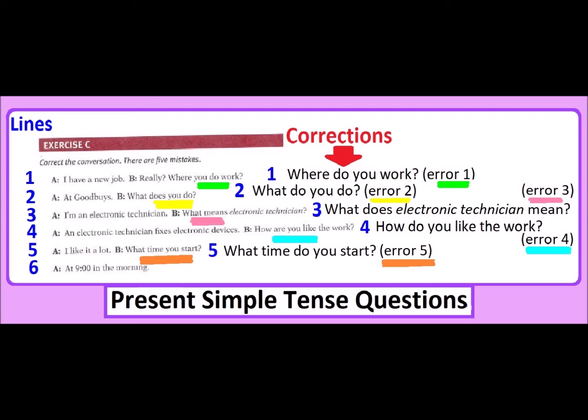In line number five, we have the question WHAT TIME DO YOU START. In the exercise they just missed again this auxiliary DO. WHAT TIME—question words about time obviously—WHAT TIME DO.